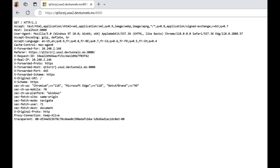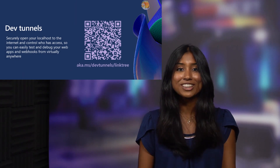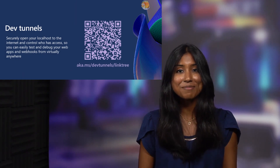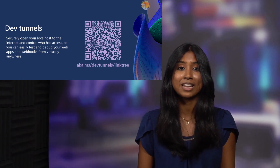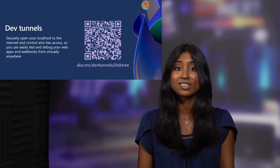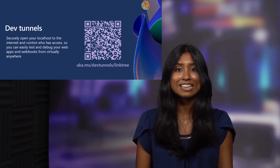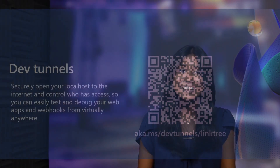Right now, I'm not hosting a project, so when I connect to the tunnel, I just see the contents of the GET request I made to connect to it. Thank you so much for watching. We would love to hear your feedback, and you can do so by submitting issues on our GitHub repo. You can find this link as well as all our links to our documentation at aka.ms/devtunnel/link3. Thank you.